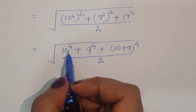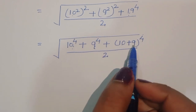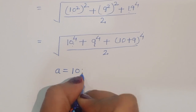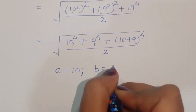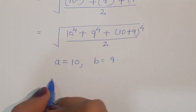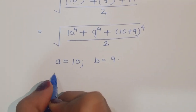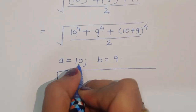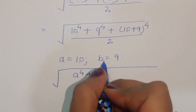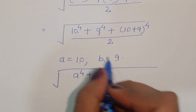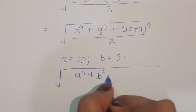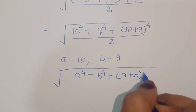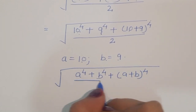Now you can see here we have 10 and 9 in both places, so we can assume a equals 10 and b equals 9. Therefore we can write this as a to the power 4 plus b to the power 4 plus (a plus b) to the power 4 divided by 2.